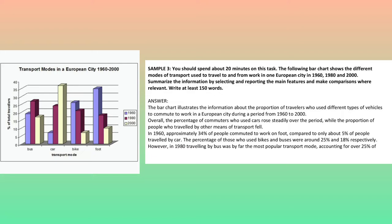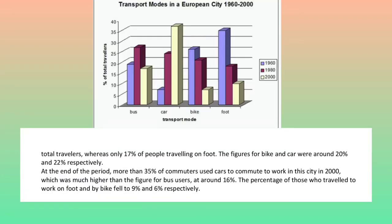The percentage of those who used bikes and buses were around 25% and 18% respectively. However, in 1980 traveling by bus was by far the most popular transport mode, accounting for over 25% of total travelers, whereas only 17% of people traveled on foot. The figures for bike and car were around 20% and 22% respectively.